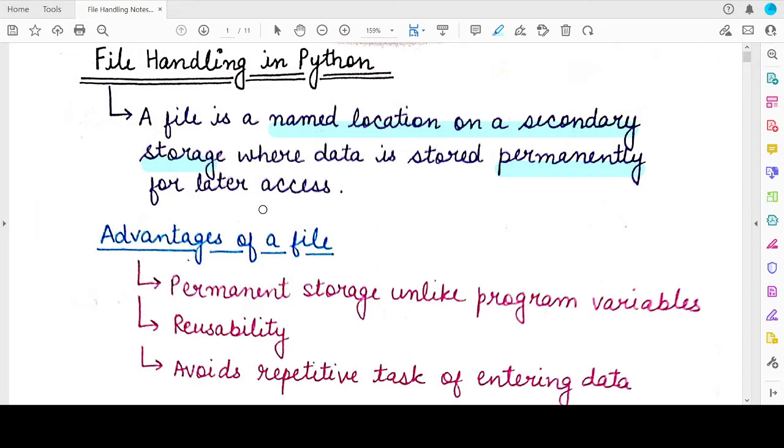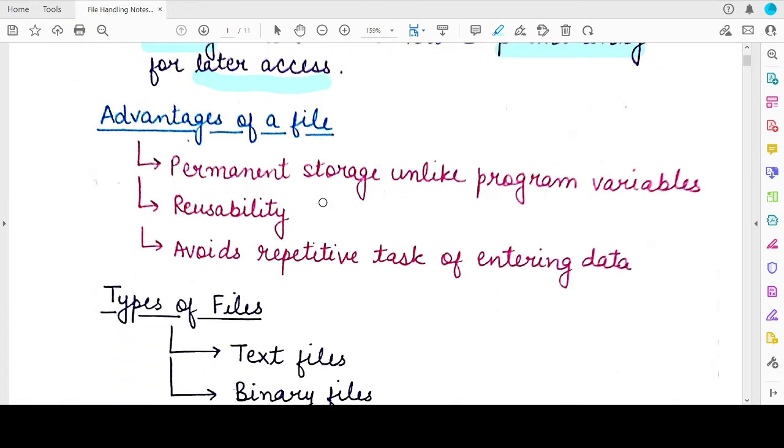So a file is a location, it is a memory location that has a name. And this memory location is present on a secondary storage and it is used to store data permanently so that data can be used for future access or later access.